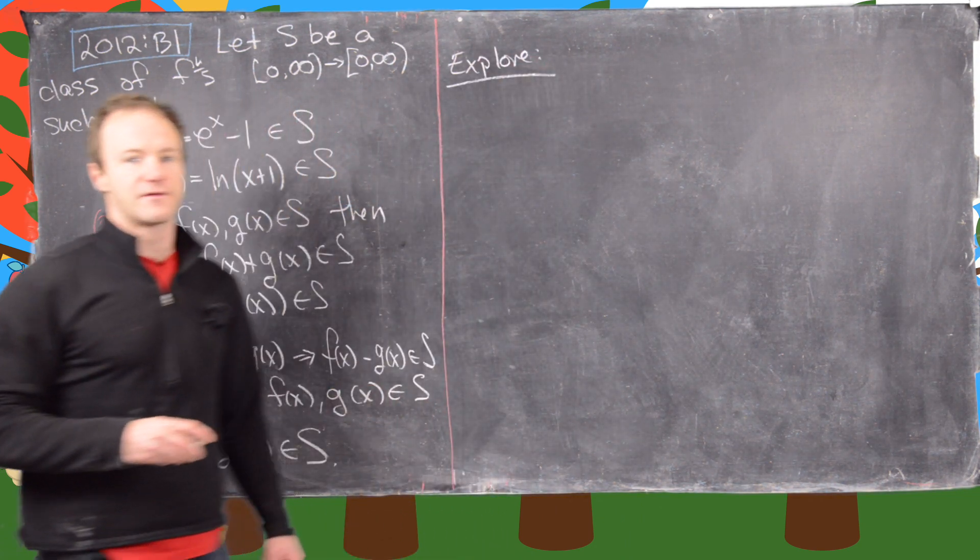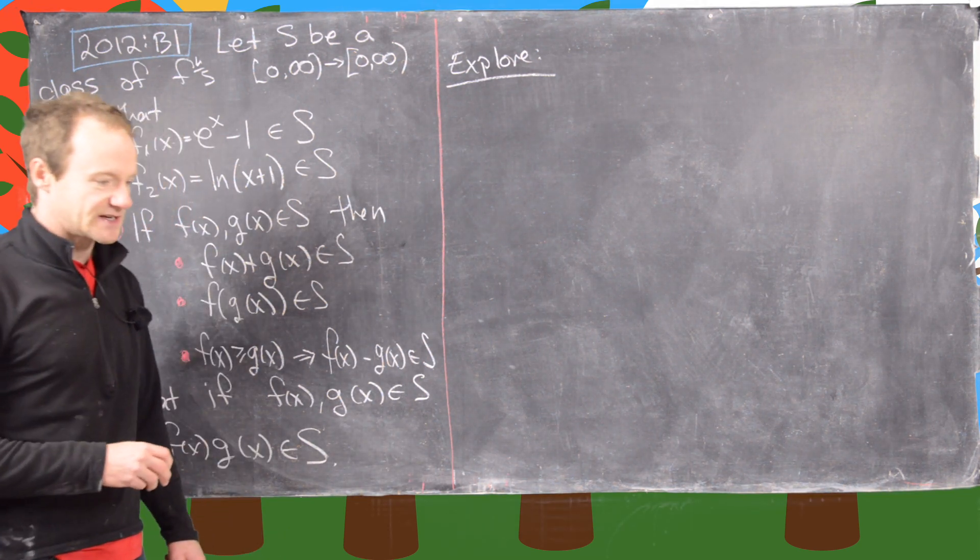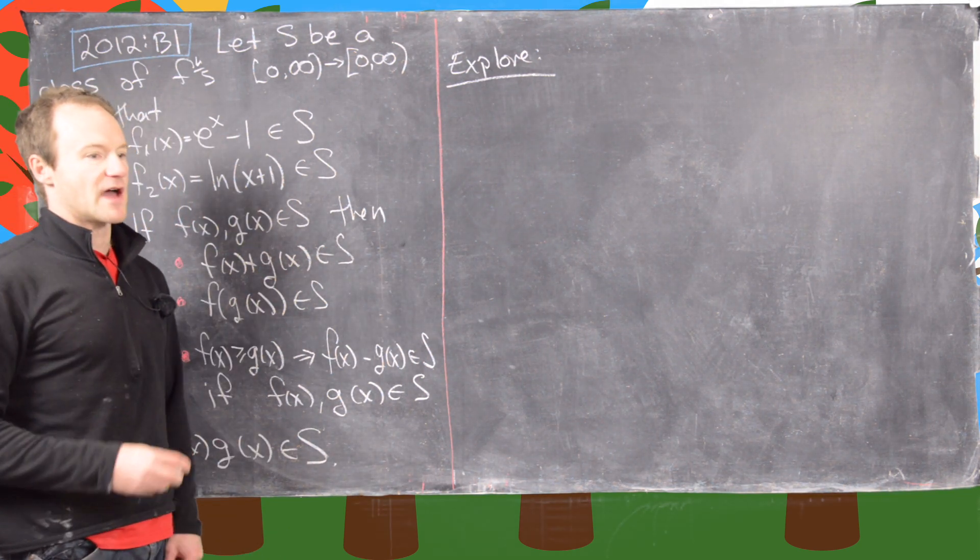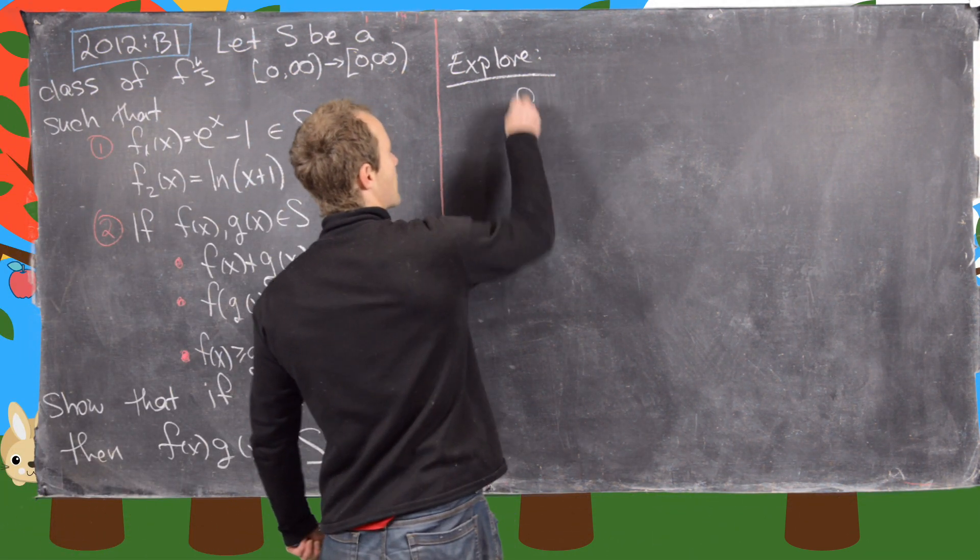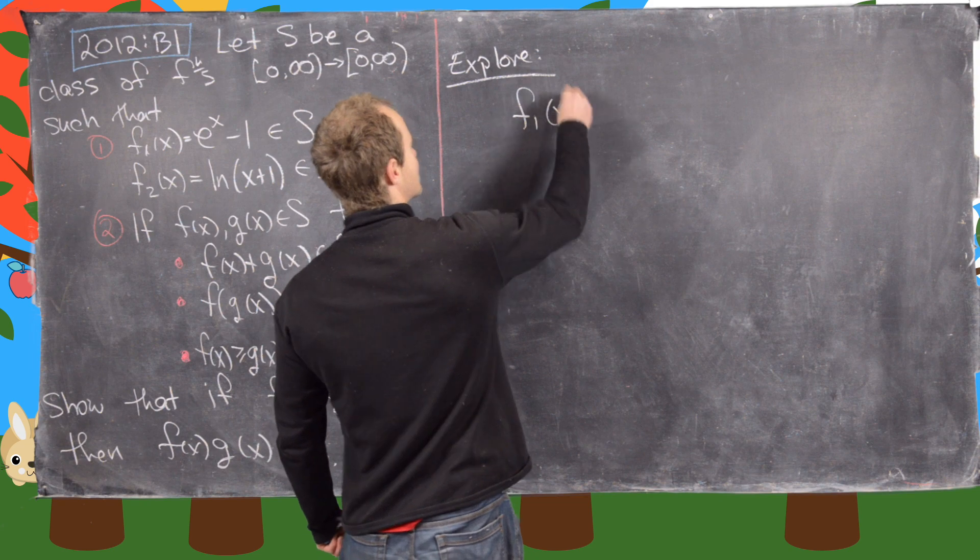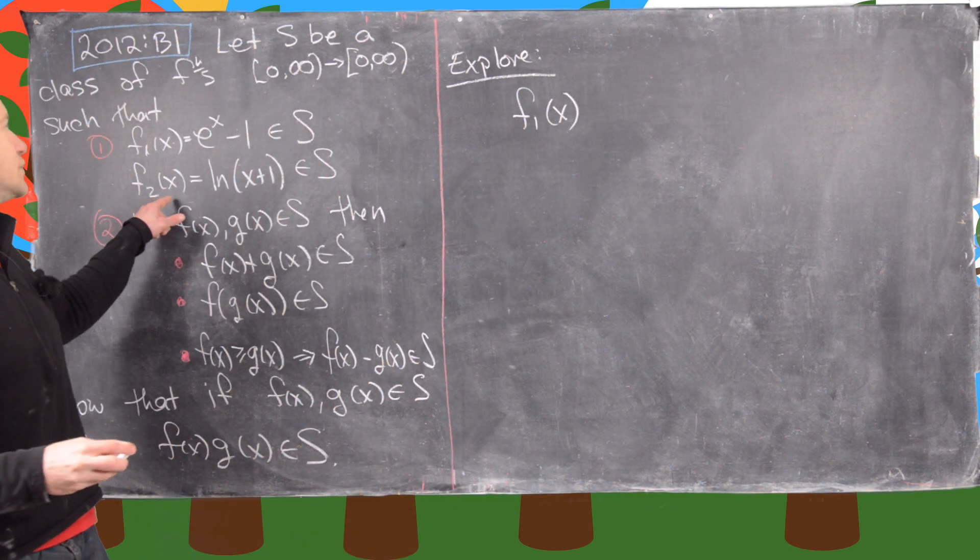We're going to start off using a really important problem solving technique, which is to simplify the problem a little bit and see if we can come up with a solution. So I want to simplify the problem by instead of considering f1 and f2 as given, let's make them a little bit nicer.